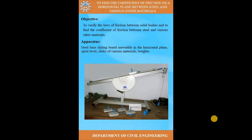You might have studied the formula: F = μN, where μ is a constant called the coefficient of friction, N is the normal force, and F is the friction force. The normal force on the body is equal to the weight of the body.